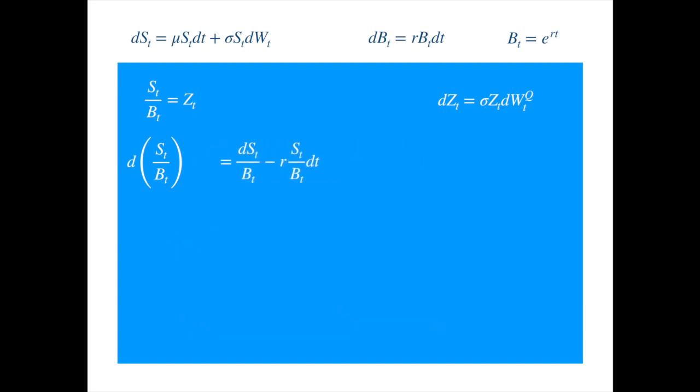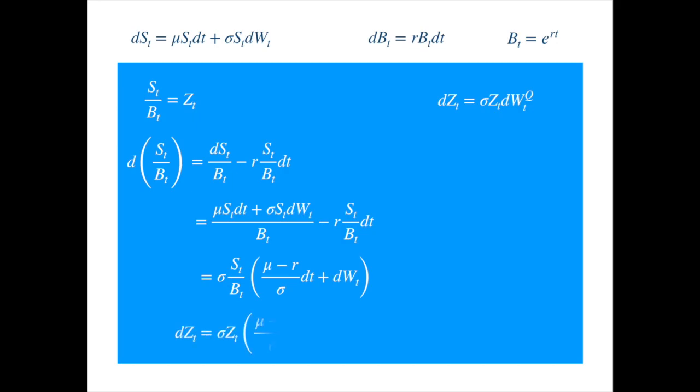Now, we substitute for dS from the equation at the top left to get... Now, we combine the expression and factor out sigma times ratio of S and B. Now, we substitute Z for the ratio of S and B to get...